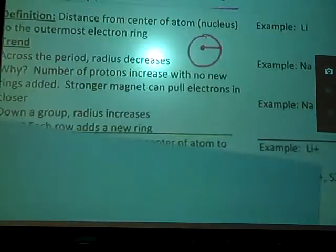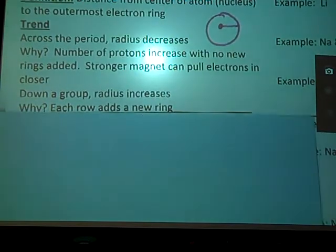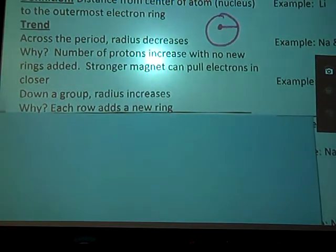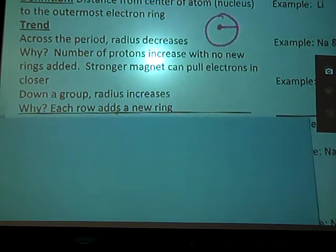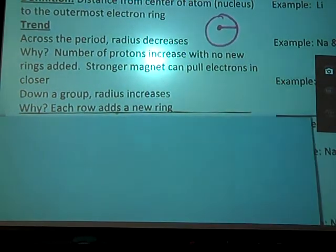Going back to our trend here real quick. As we go down a group my radius increases. And if you remember again from our last video we said that every time we talk about going down a family, down a group, our key phrase is more rings. And that is exactly the case here. Each row adds a new ring.